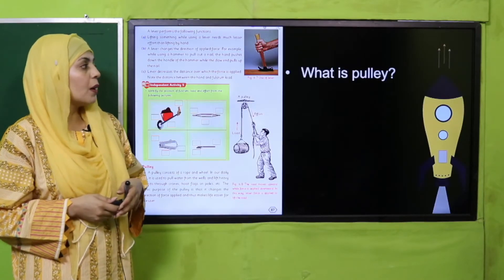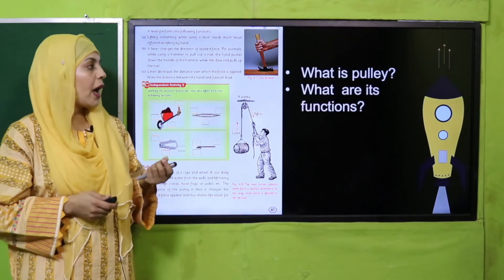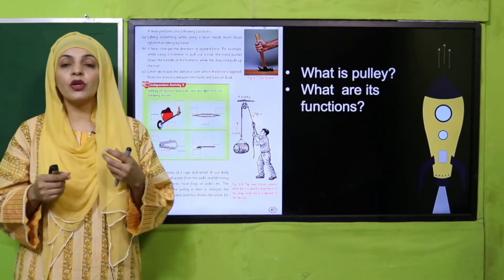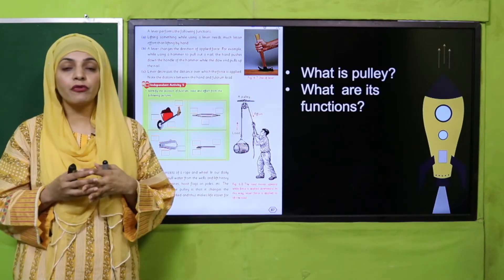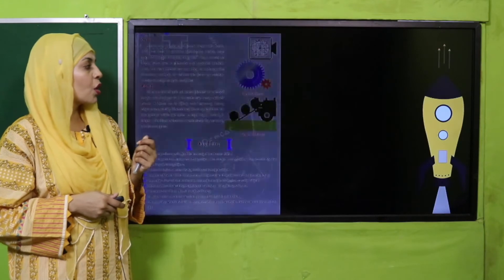What is a pulley? Pulley is basically a wheel and rope. What are its functions? When you apply it, it changes the direction of the force and helps to lift heavy loads.